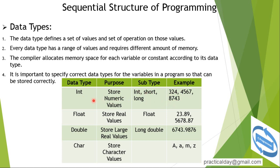The subtypes of integer are int, short, and long. Float stores real values and its subtype is float. An example of float values would be 23.89 and 5678.87.